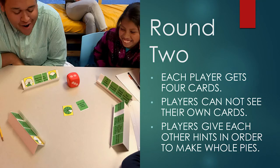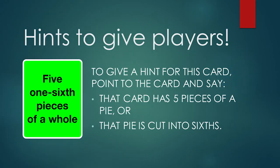In Round 2, deal each player four cards. Players place their cards in a card holder facing away from them. Players can see each other's cards but cannot see their own. Players take turns playing cards from their hand. Because they cannot see their own cards, they need hints from others. Players can give each other information about a card. They can either tell the player how many pieces of a pie the card has, or they can tell the player how many pieces the whole pie has.